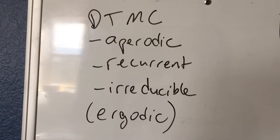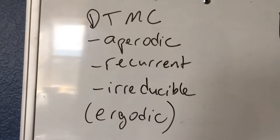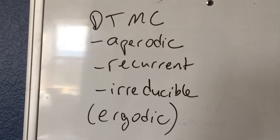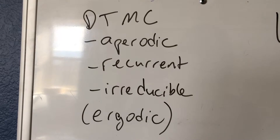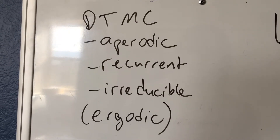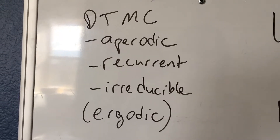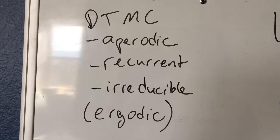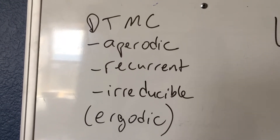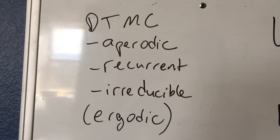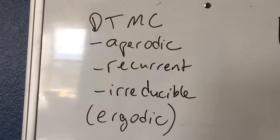Let's assume we have a discrete time Markov chain that is ergodic. All states in the chain are aperiodic and recurrent, and it's irreducible, which means we have one class only in this Markov chain.